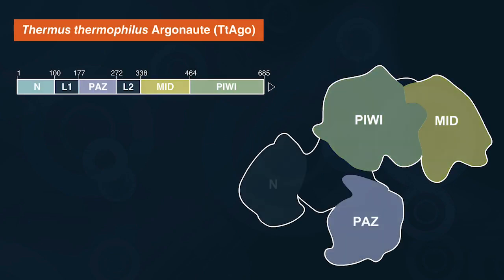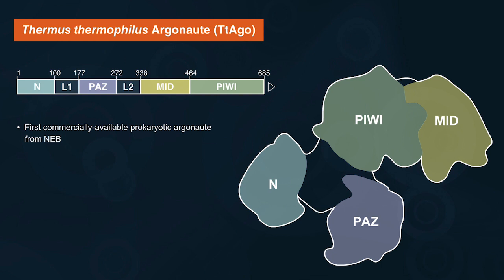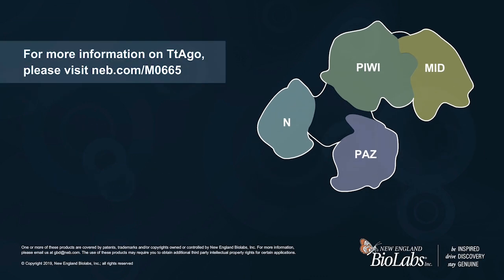Thermus thermophilus Argonaut, also known as TtAgo, is the first commercially available prokaryotic Argonaut from NEB. TtAgo is a thermostable prokaryotic Argonaut which utilizes short, 5' phosphorylated, single-stranded DNA guides to target and cut DNA substrates at temperatures between 65 and 85 degrees Celsius. For more information on TtAgo, please visit NEB.com/M0665.